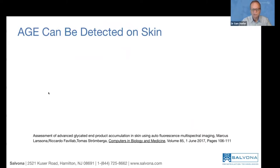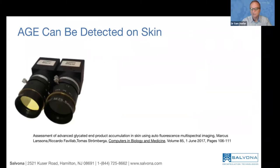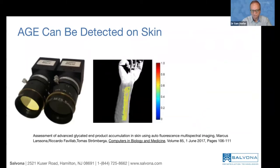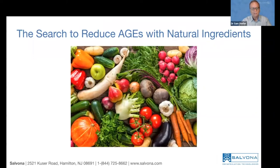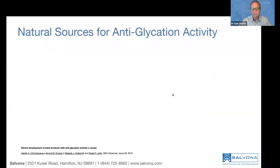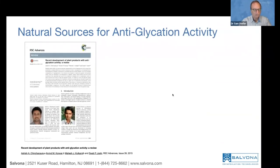This is not a mysterious effect — there are cameras that can take pictures of the skin and see the accumulation of AGE without any penetration. You can see where wrinkles will appear before they do. The solution we're looking for is always a natural solution rather than synthetic molecules. A 2015 paper on recent developments of plant products with anti-glycation activity identified the whole chemical process that ends up with AGE.